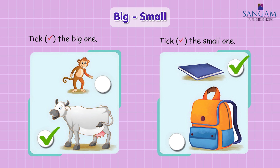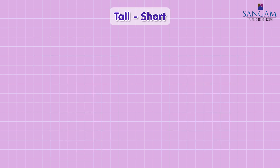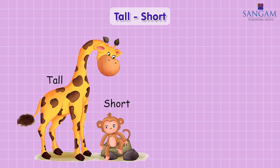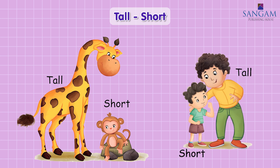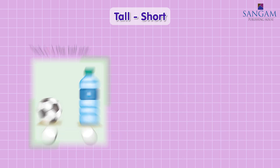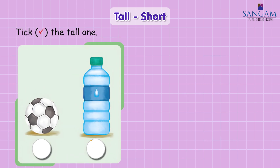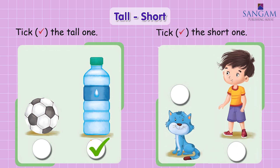Put the tick for the book. Big, tall, short. We have tall giraffe, short monkey. We have tall father, short son. Tick the tall one. Ball, bottle. Which is tall? Bottle. Tick the tall bottle. We have a short cat and a tall boy. Tick the short one. Tick the cat.